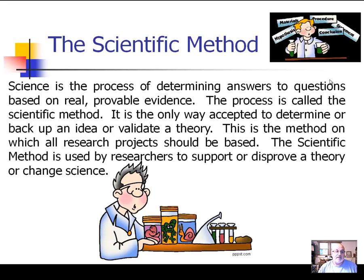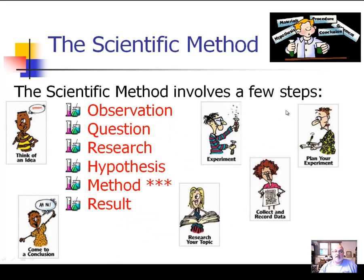This is the method on which research projects are based and tested, and it is this method that researchers use to support or disprove theories or change science. The process actually involves a few steps — these are the six that we actually use.